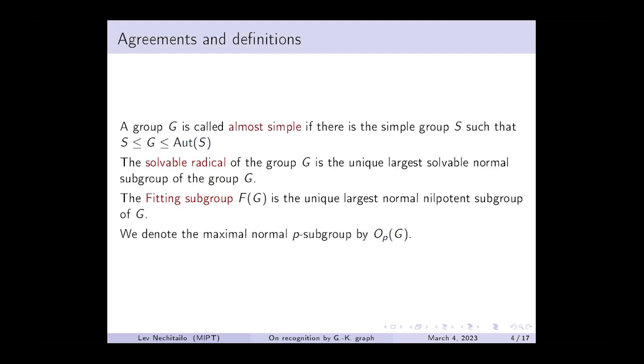We will also use some standard notation. G is almost simple if it is sandwiched between a simple group S and its automorphism group. The solvable radical of group G is the unique largest solvable normal subgroup of G, and the Fitting subgroup F(G) is the unique largest normal nilpotent subgroup of G.